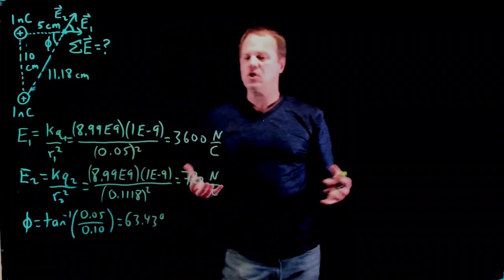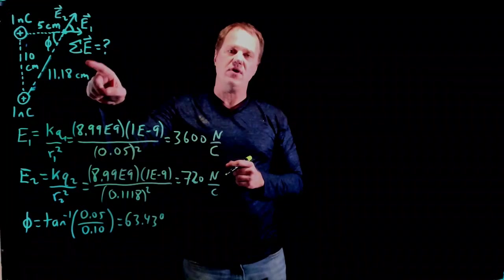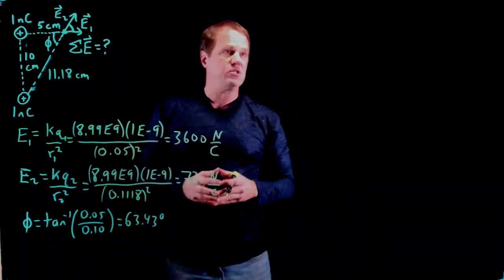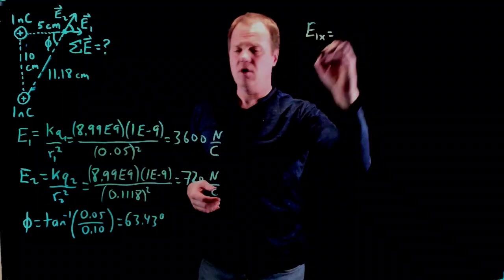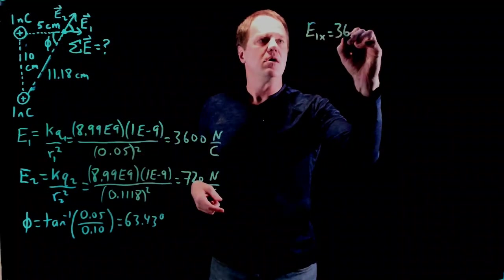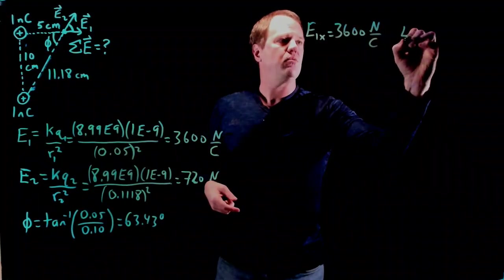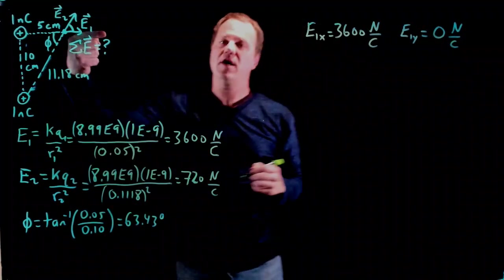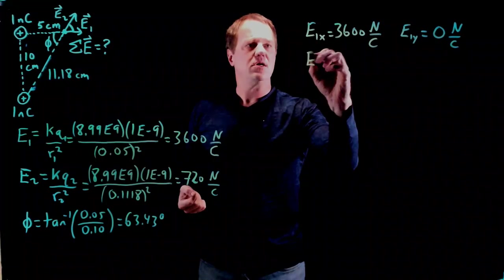So I've got magnitude and direction for each of these. The goal here was to calculate the net electric field. In order to do that, I have to convert to x and y components. So E1x, the x component of the first one, will just be 3600 because it's pointing along the x-axis, so the conversion to x and y components is pretty trivial. And E1y will be equal to zero. There is no y component to a vector pointing along the x-axis.